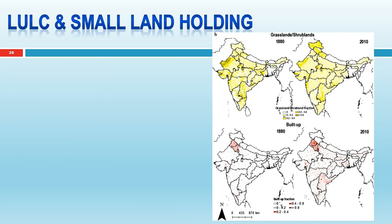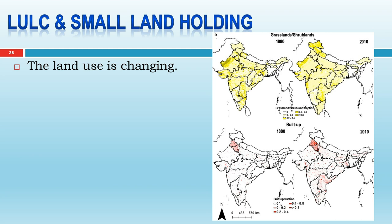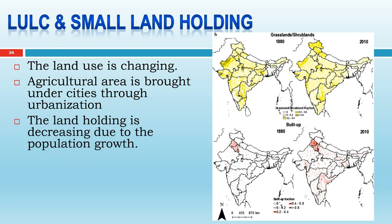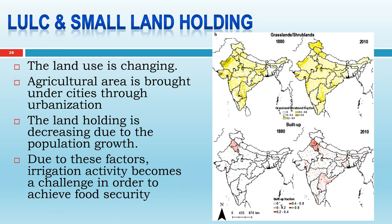Land use change and small land holdings are also challenges. Because of urbanization and industrialization, land that was under irrigation is being converted to non-irrigation use. Agriculture land is continuously being converted for non-agricultural use through urbanization, and land holdings are decreasing due to population growth. Due to these two factors, irrigation activity becomes a challenge for achieving food security.